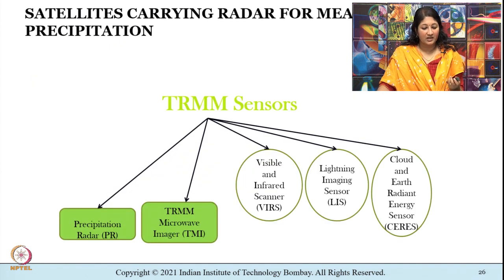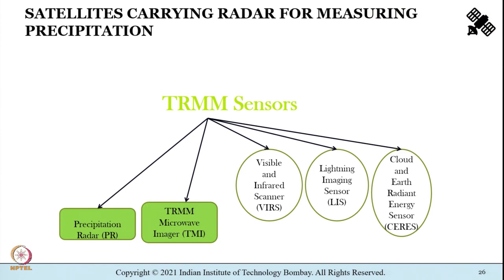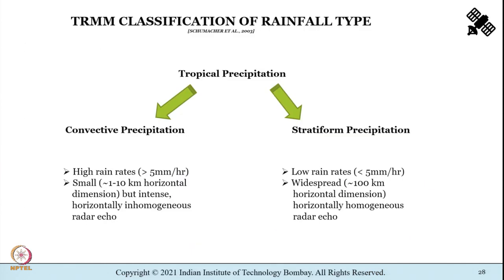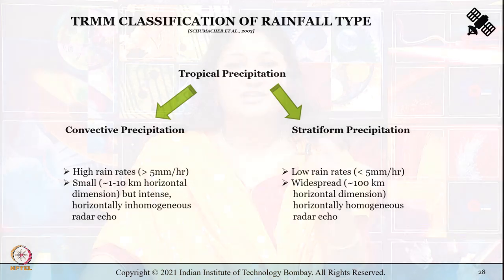The Precipitation Radar is capable of giving a three-dimensional structure of rainfall. It operates in the Ku band, has a horizontal resolution of 4.3 km at nadir, a vertical resolution of 0.25 km, and a sensitivity of 0.7 mm/hr. The TRMM satellite itself has five different sensors, one of which is the Precipitation Radar; the others include the TRMM Microwave Imager, the visible and infrared scanner, and the lightning imaging sensor. Different data products can be generated: Level 1 radiances, Level 2 instantaneous geophysical parameters, and Level 3 gridded TRMM precipitation data products including quarter-degree products.